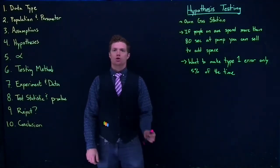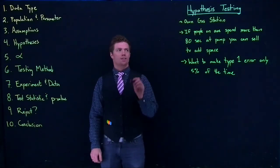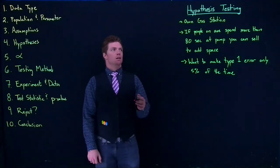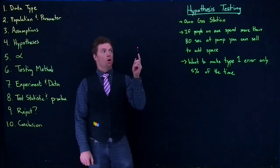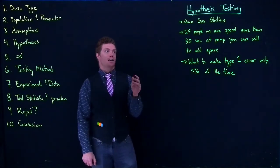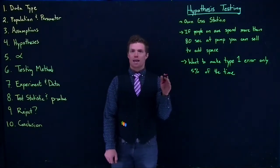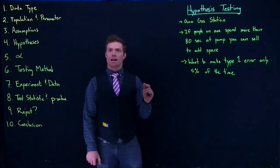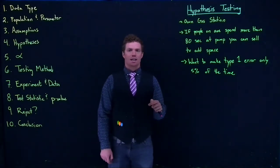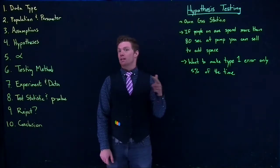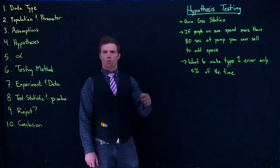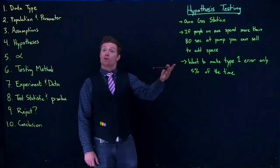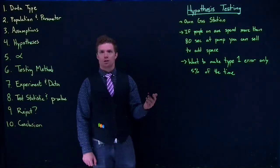Let's go ahead and do an example of one sample hypothesis testing. Suppose that you own a gas station, and if people spend more than 80 seconds on average at the pump, you can sell TV ad space. There's a little TV at the pump and you can sell ad space to whoever wants to buy an advertisement. But it has to be on average greater than 80 seconds before you can start selling the ad space.